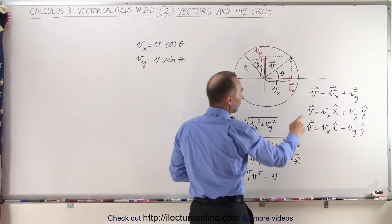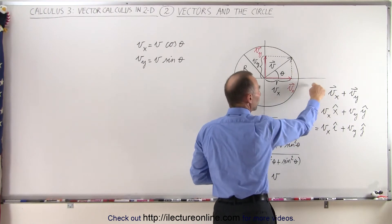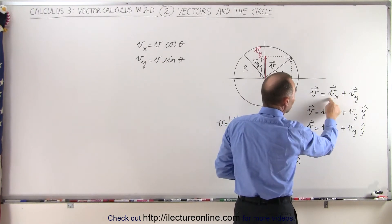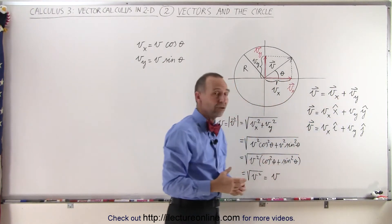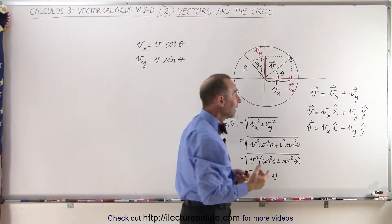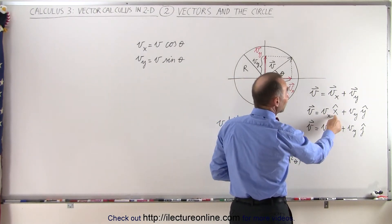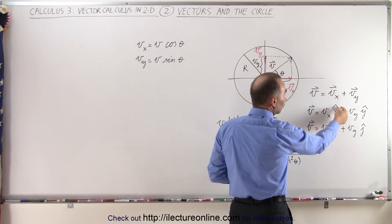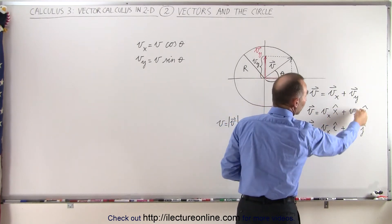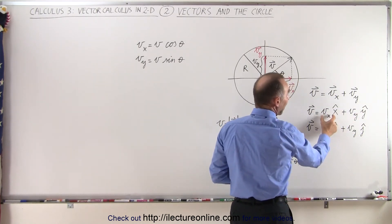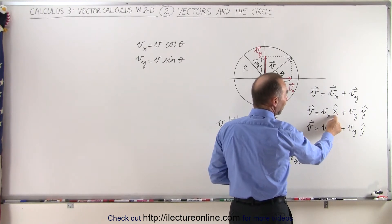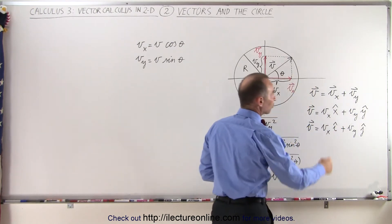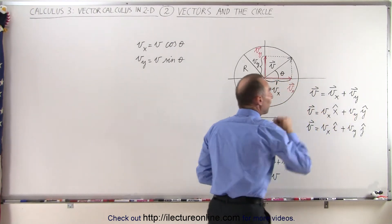We can represent the vector v — written with a little arrow on top — as the sum of its two components, the x and the y components, which by themselves are also vectors. The vectors can be written as a magnitude times the unit vector in the direction they're pointing. So the x component points in the x direction, giving the unit vector in the x direction, and the y component gives the unit vector in the y direction. It's the magnitude of the x component multiplied by the unit vector in the x direction, plus the magnitude of the y component multiplied by the unit vector in the y direction, and the sum of those two represents the vector v.